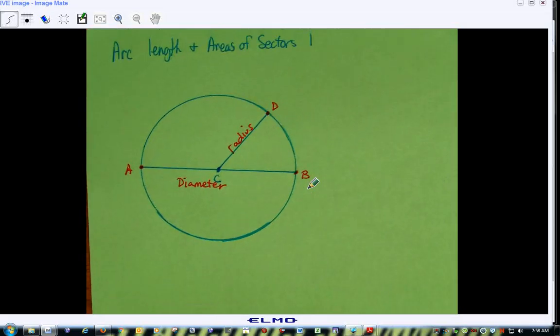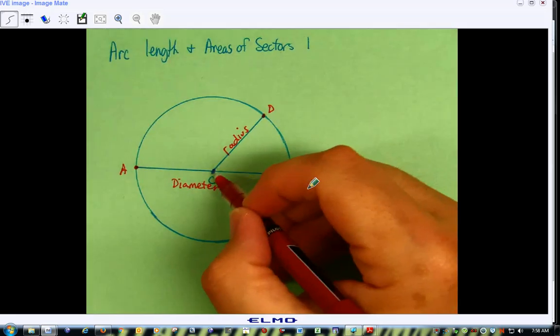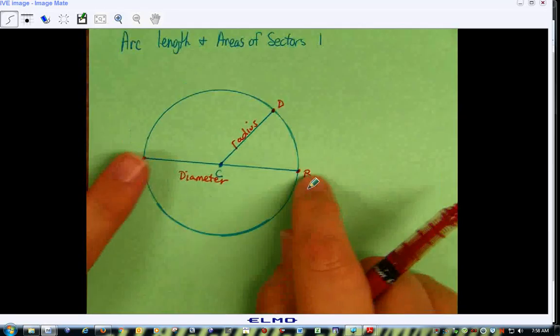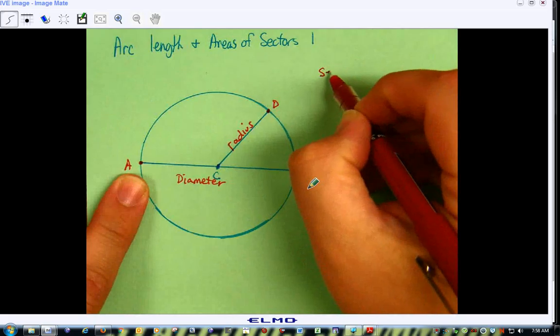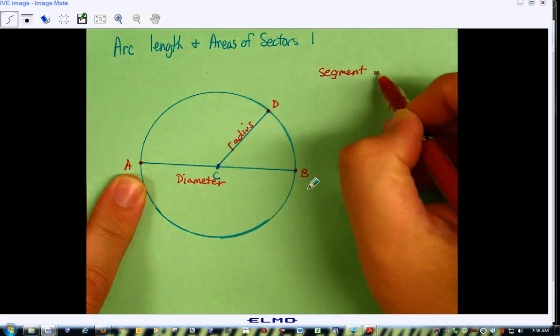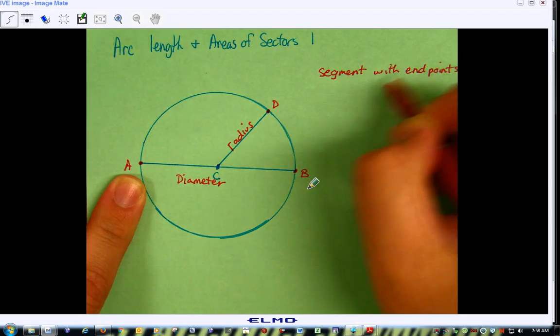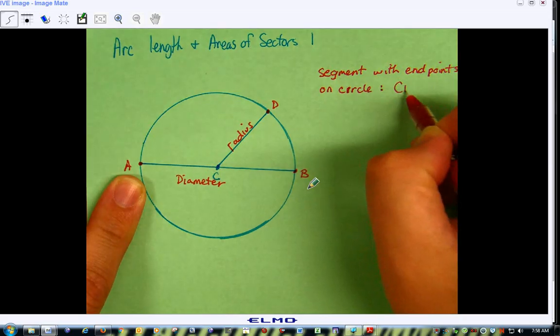Alright, for arc length and areas of sectors, we have two main segments in a circle based on the center. If we have from the center to a point on the circle, that's a radius. If we have a segment whose endpoints are on the circle, this is called a chord.